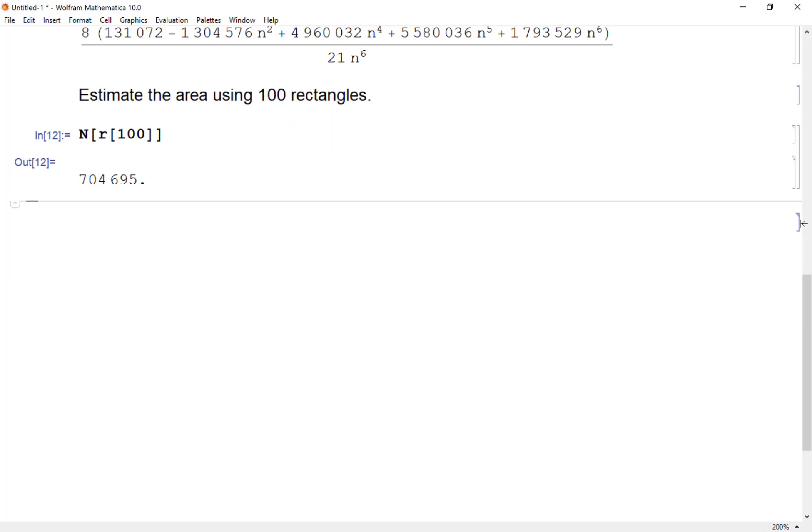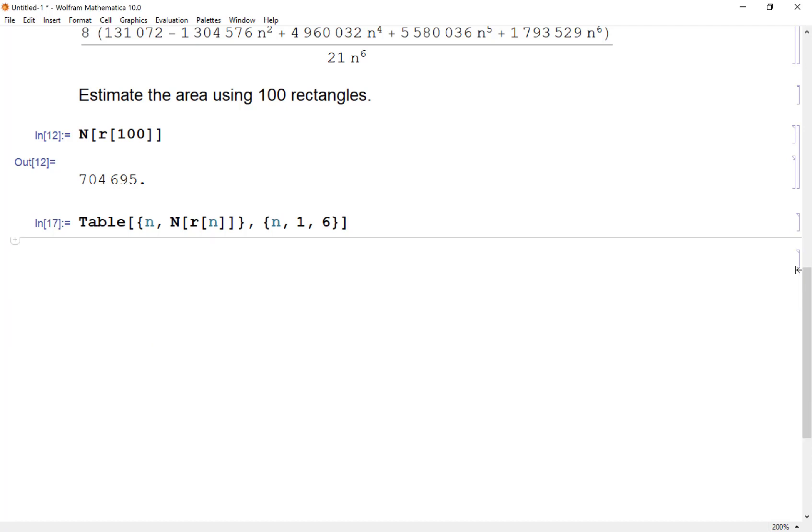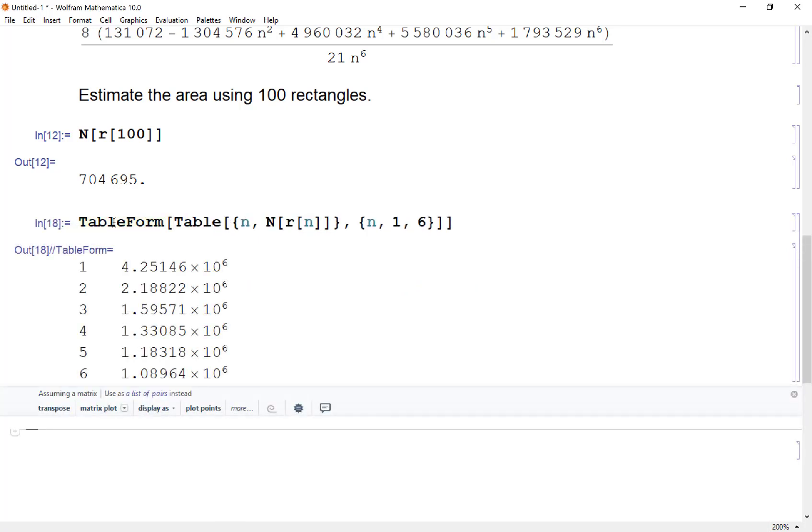I actually could build a table of these values pretty easily. So I can say I'm going to make a table, and I'm going to put a list in my table for n and n R n. And then, for example, n goes from one to six would give me the first six values in the table. It doesn't look very good, so I can clean this up using the table form function. And so that looks a little better.